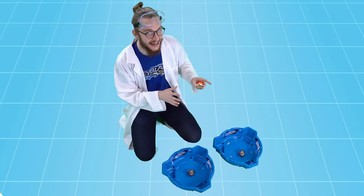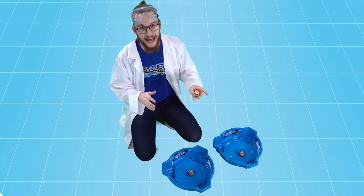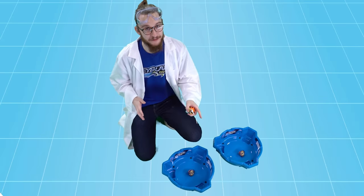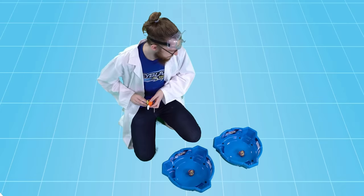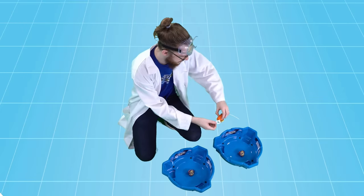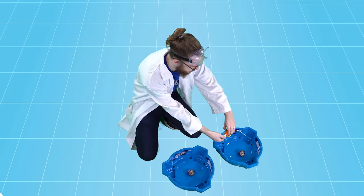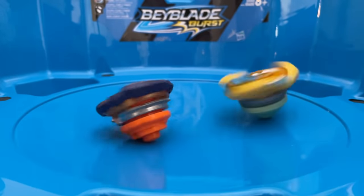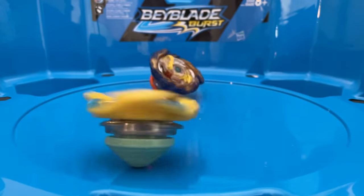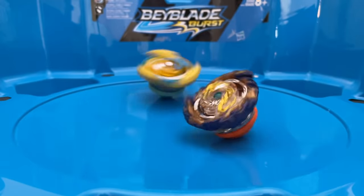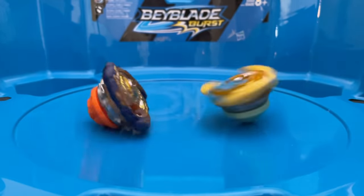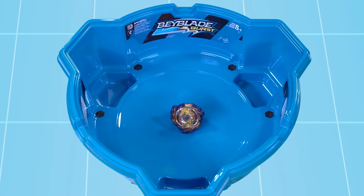I'll launch a Sword Valtryek V5 into our second stadium to act upon our second Mirage Fafnir F6. Two, one, let it rip. Our second Mirage Fafnir F6 is starting to move as it's hit by the Sword Valtryek V5. It took a few tries, but with enough hits it can even start spinning. Without being hit, it would have just kept lying there, like our first Mirage Fafnir F6, which never started moving.